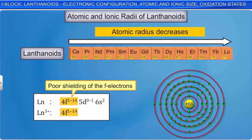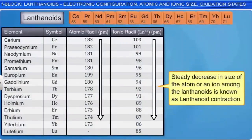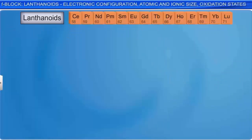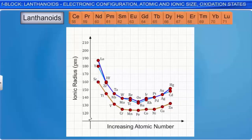This steady decrease in size of the atom or ion among the lanthanoids is known as lanthanoid contraction. Because of lanthanoid contraction, the sizes of the third row of the transition elements are very similar to those of the second row. Thus, the second and third rows of the transition elements resemble each other more closely than the first and second rows. Pairs of elements such as zirconium and hafnium, niobium and tantalum, and molybdenum and tungsten are almost identical in size, making chemical separation very difficult.